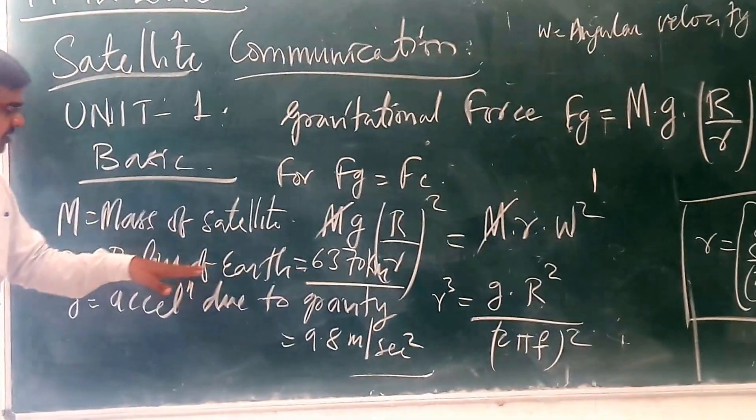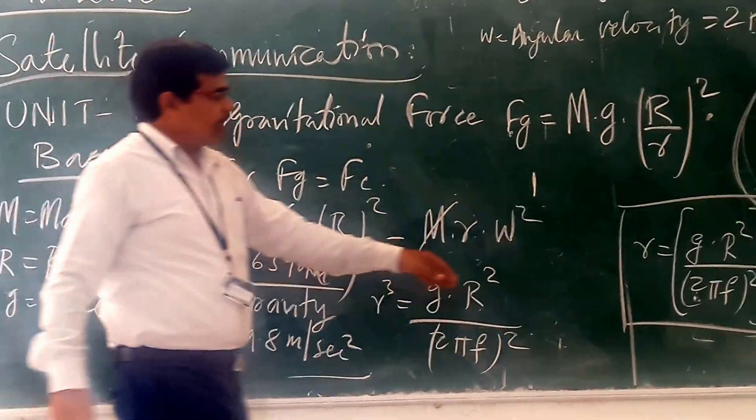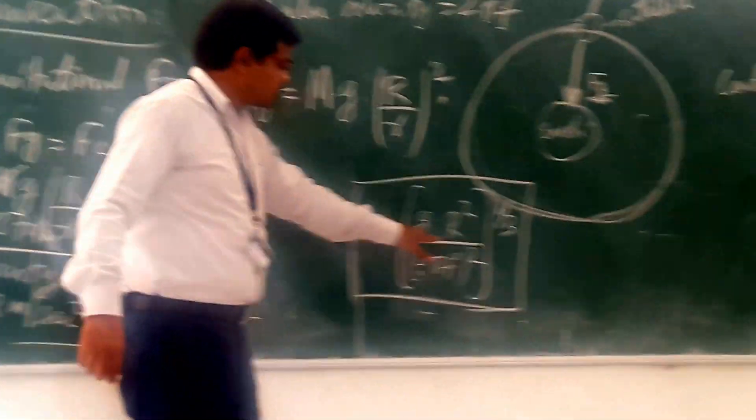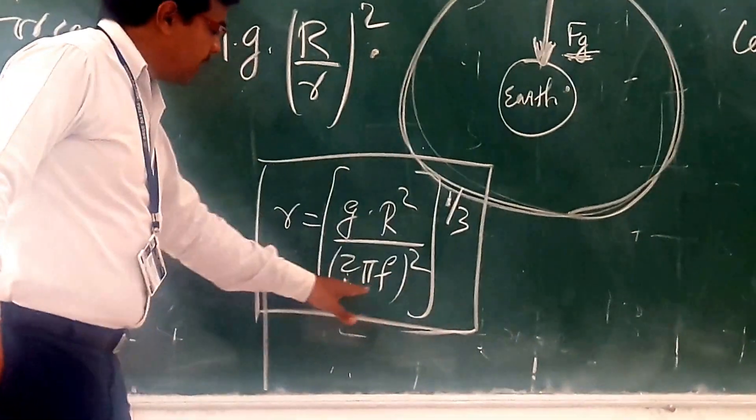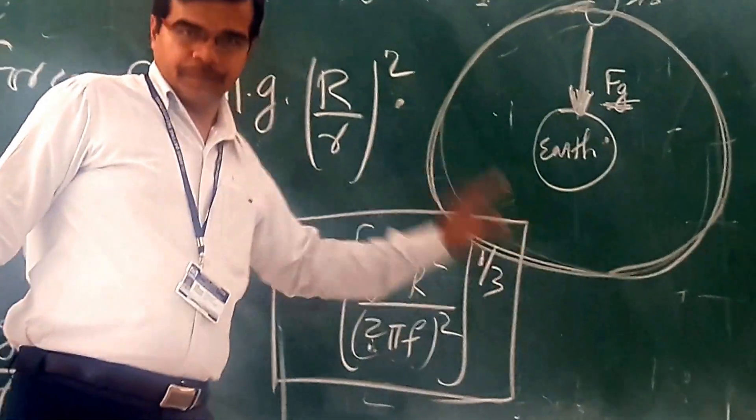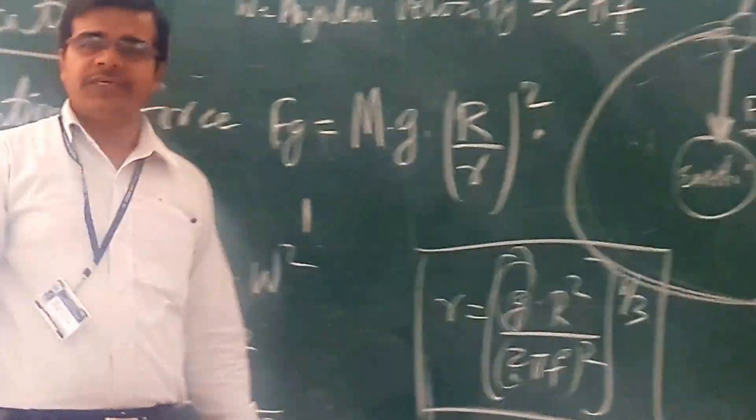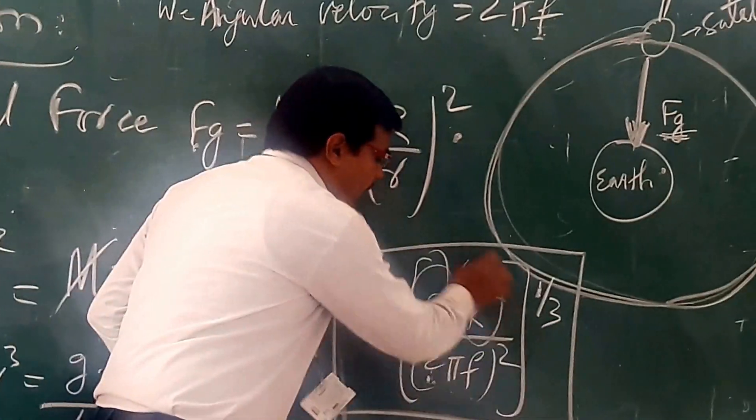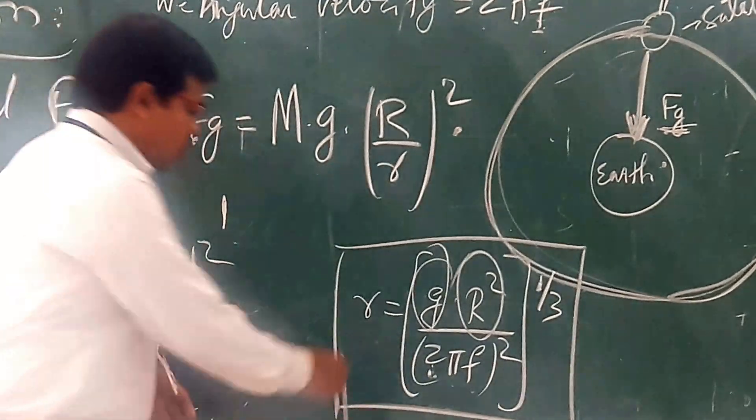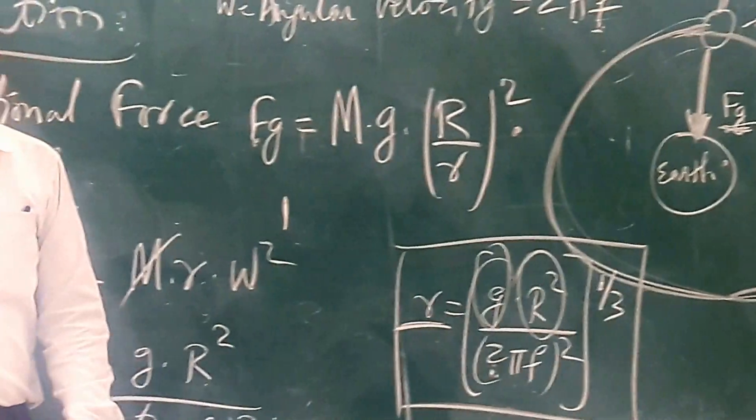Now when we solve this, we get that small r equals (gR² divided by (2πF)²) to the power 1/3. Here, if we see that gR is constant, so this small r, that is the distance of the satellite from the center of the Earth, it depends only on this frequency.